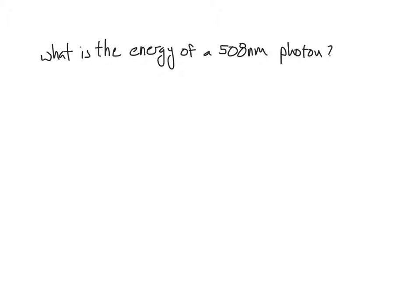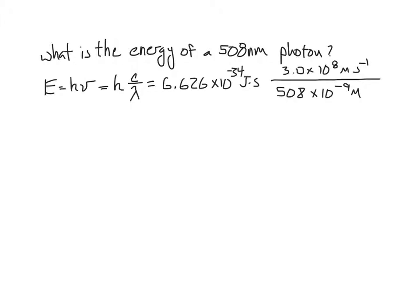Let's use the equation we just learned about to calculate the energy of the 508 nanometer photon we used in the example calculation before. The energy is equal to Planck's constant times the frequency, or is equal to Planck's constant times c divided by the wavelength. Plugging the values in that we have, we calculate a photon energy of 3.9 times 10 to the negative 19 joules.